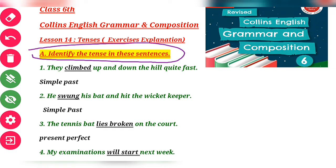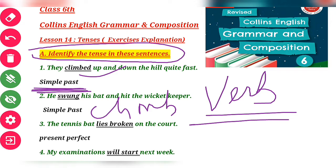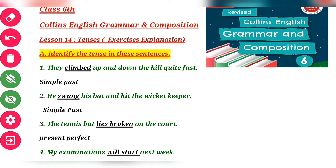The first sentence is: 'They climbed up and down the hill quite fast.' First of all, try to pick up the verb given in the sentence. The verb is 'climbed' — it is the second form of 'climb'. The second form of the verb is only used in Simple Past Tense, so it is Simple Past.